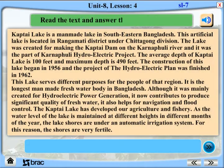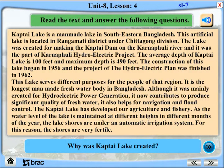Read the text and answer the following questions. Why was Kaptai Lake created? Kaptai Lake is a man-made lake in Southeastern Bangladesh, located in Rangamati District under Chittagong Division. The lake was created for making the Kaptai Dam on the Karnafuli River as part of the Karnafuli Hydroelectric Project. The average depth is 100 feet and maximum depth is 490 feet. Construction began in 1956 and the hydroelectric project was finished in 1962. This lake serves different purposes and is the longest man-made freshwater body in Bangladesh.